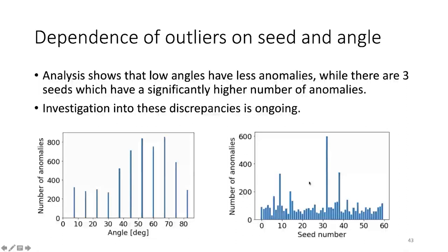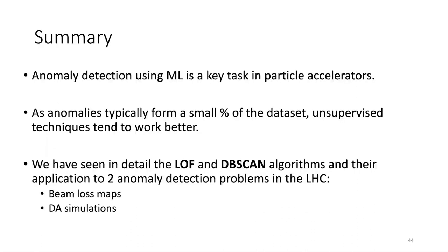In conclusion: anomaly detection is a key task in particle accelerators, and we've seen two examples using machine learning to tackle these problems. An important takeaway is that unsupervised methods likely work better when dealing with skewed datasets. We've covered in detail two anomaly detection methods — local outlier factor and DBSCAN — and their applications to collimation hierarchy beam loss maps and dynamic aperture simulations.